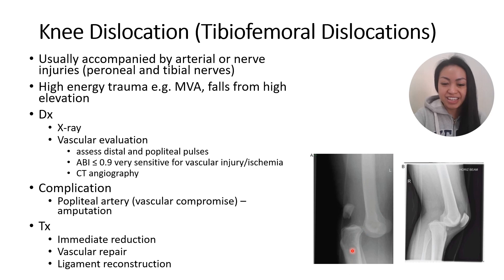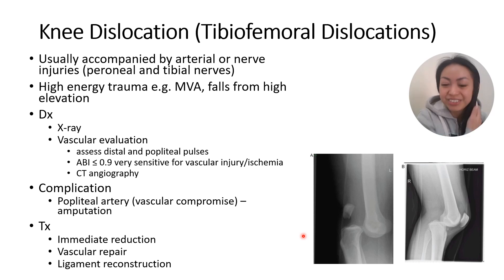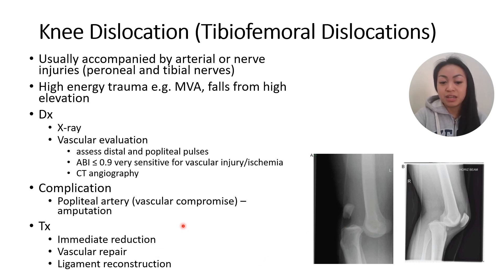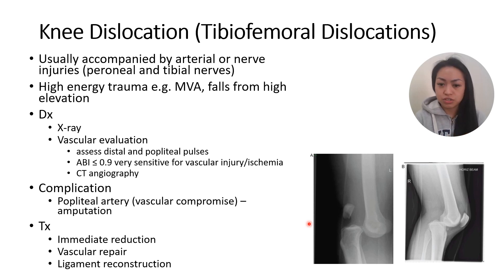Treatment: immediate reduction — try to put the bones back together and reduce the gap. Then orthopedic consult for ligament repair and possible vascular surgery consult if the popliteal artery is involved. With the degree of displacement seen in tibiofemoral dislocations, definite ligament ruptures are expected, so orthopedic surgeons will perform ligament reconstruction.